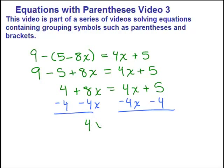So we've got 4x equals 1. Okay, last step. Divide by 4, the coefficient of x, to get x equals 1 fourth.